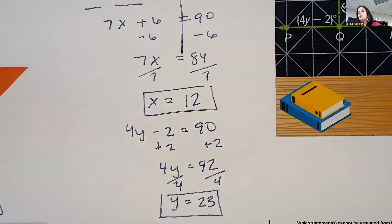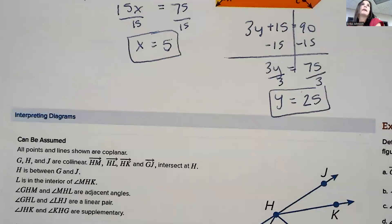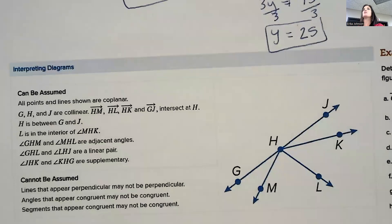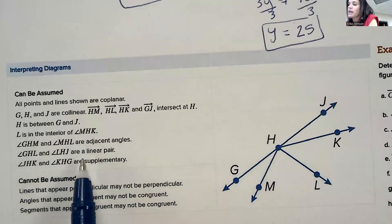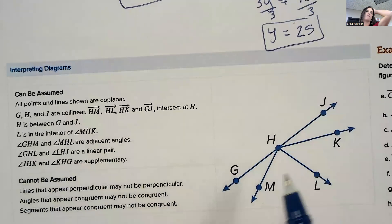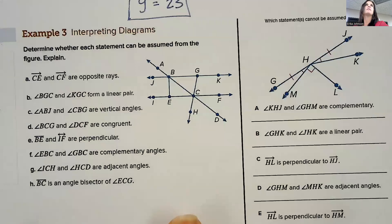The last part of the lesson is going to put everything together. We have to make sure that we don't assume too much. What you can assume is that points and lines shown are co-planar, that if they look co-linear they are, that H is between G and J, that angles are adjacent if they look next to each other, and that they form a straight line or are supplementary if they appear to make a straight line. Lines that appear perpendicular may not necessarily be — they might be off by just a degree. Angles or segments that appear congruent may not be exactly congruent — you can't just assume that.